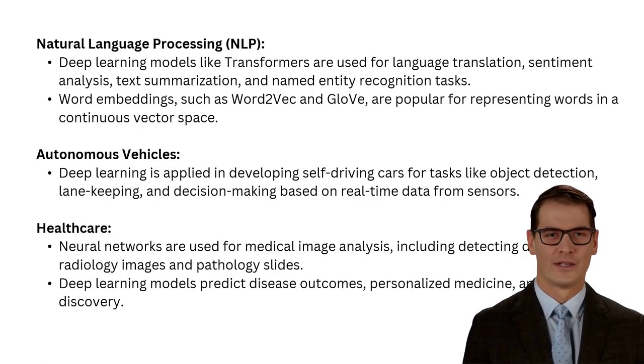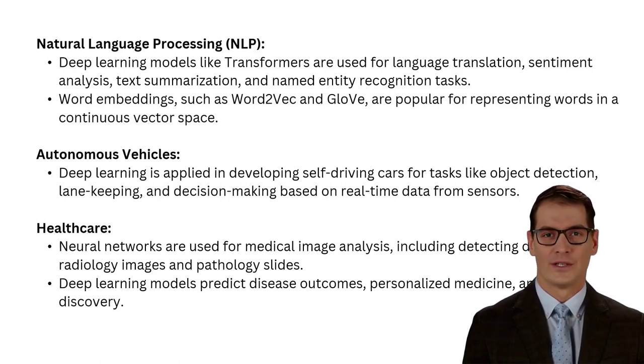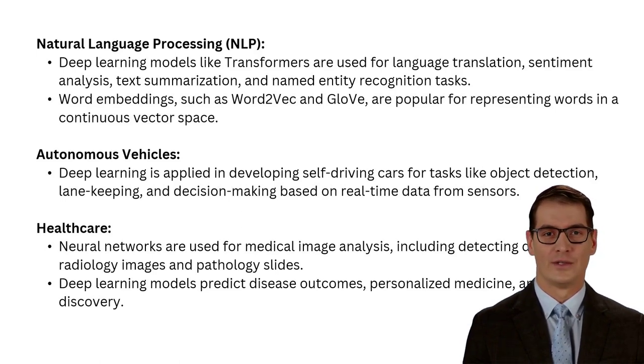ANNs are a type of machine learning algorithm modeled after the human brain. They are used to solve tasks like computer vision, natural language processing, and autonomous vehicle navigation.